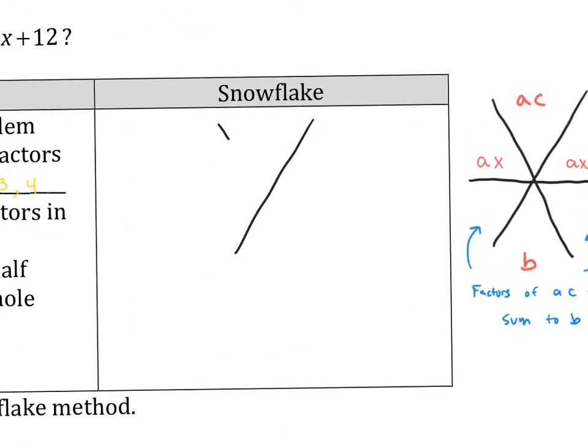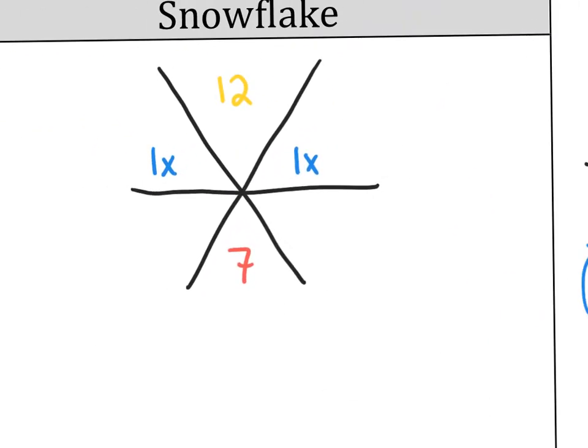So let's walk through this one. I set up my x with a horizontal line. Then a times c is 12, and b goes on the bottom, which is 7. Then all I have to do is put my 1x here and 1x here. Now we need to find the factors of ac that sum to b, the factors of 12 that sum to 7. Let's see here. 12 and 1? Nope. 12 times 1 works but 12 plus 1 is too big. 6 and 2? 6 times 2 works for that, 6 plus 2 is 8. Oh so close but doesn't work. So the answer is 3 and 4. Does it matter where I put the 3 and the 4? The answer is no.